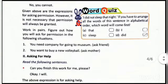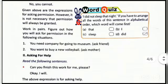Work in pairs and figure out how you will ask for permission in the following situations. First: you need company for going to the museum — you may say to your friend, 'Can you accompany me to the museum?' And your friend may reply, 'Yes, I can, as I am free today.' Second: you want to buy a new volleyball — you may ask your mother, 'Can I buy a new volleyball?' And your mother may reply, 'Yes, sure.'